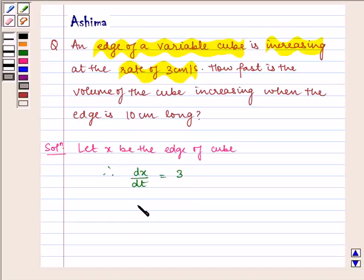Volume of a cube is given by V = x³. Now differentiating V with respect to t, we get dV/dt = d/dt(x³).